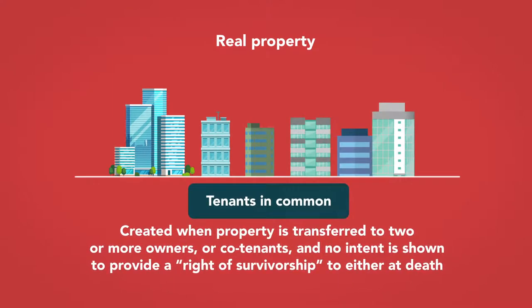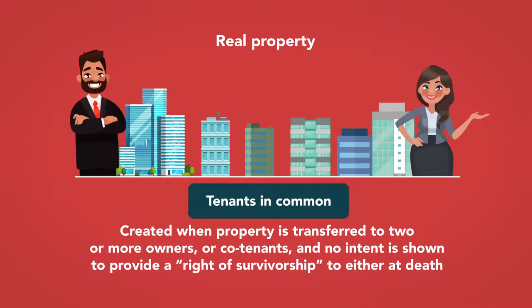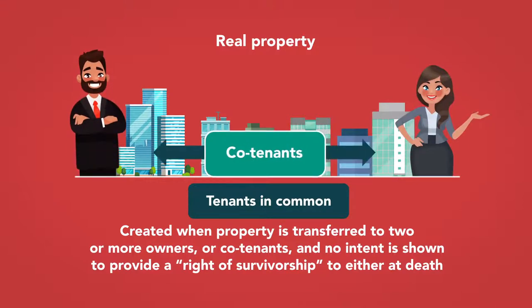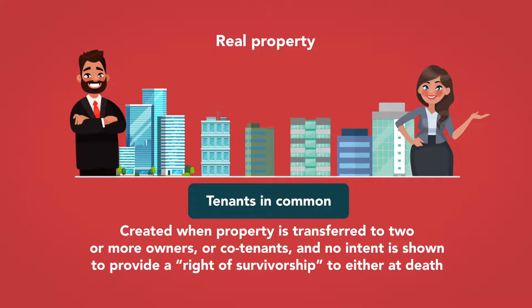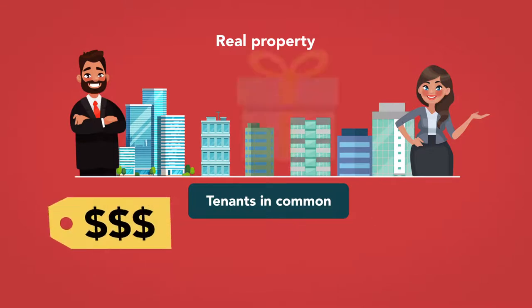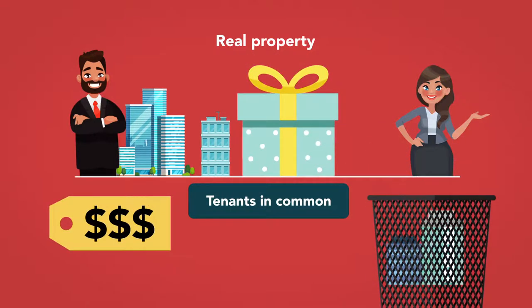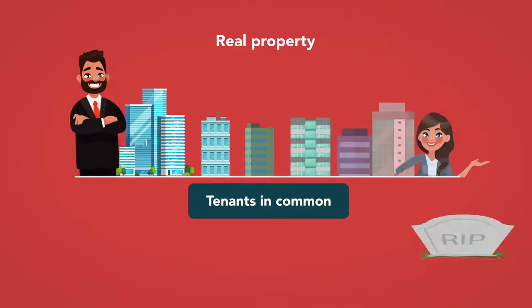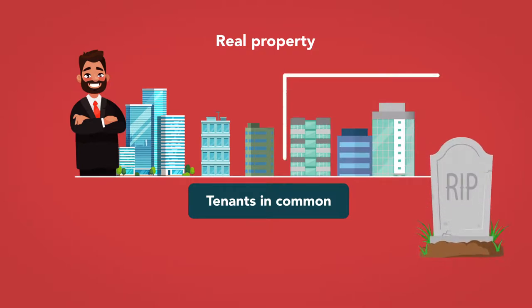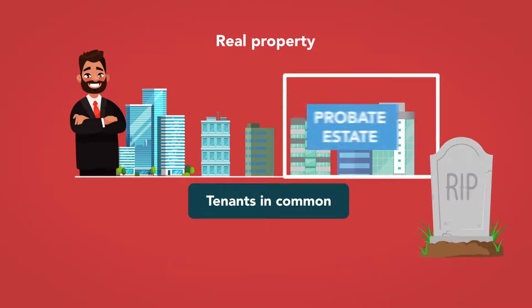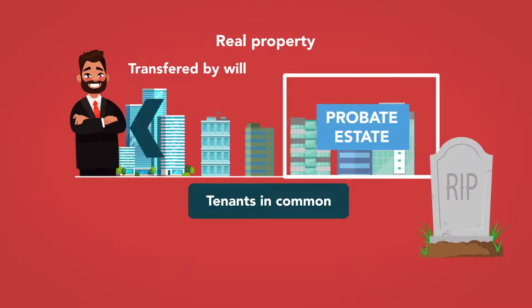A tenancy in common is created when property is transferred to two or more owners, or co-tenants, and no intent is shown to provide a right of survivorship to either at death. Because neither party has a right of survivorship, each can sell, gift, or otherwise dispose of her share. When one co-tenant dies, her share becomes part of her probate estate, which means that it can be transferred by will.